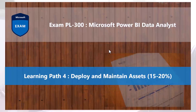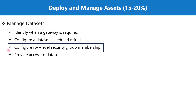Bismillah ar-Rahman ar-Rahim. Hello everyone. Welcome back to the PL300 exam preparation series where we are exploring the fourth learning path: deploy and maintain assets. In this video we are going to discuss the topic 'configure row level security group membership,' which is part of the section 'manage datasets.'